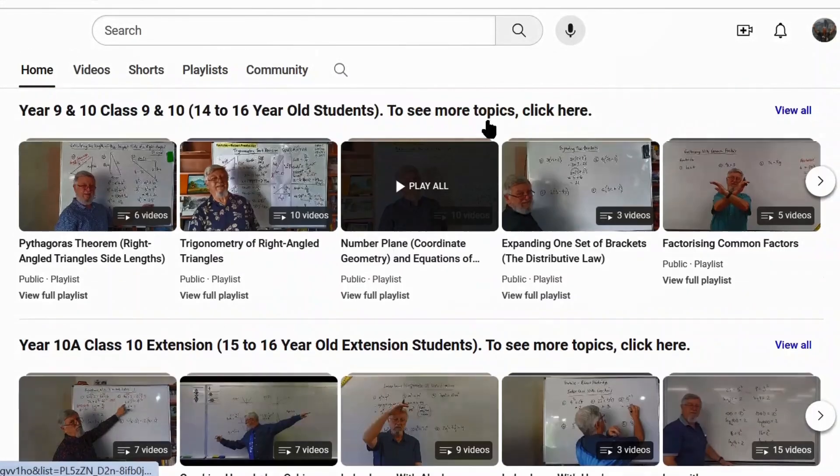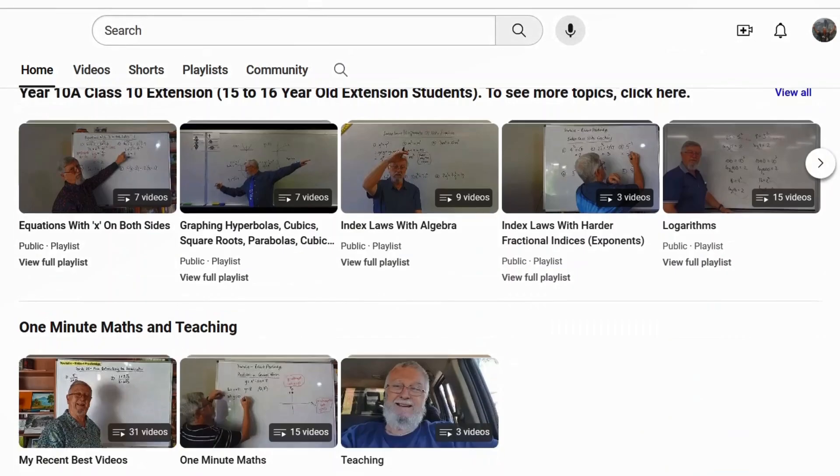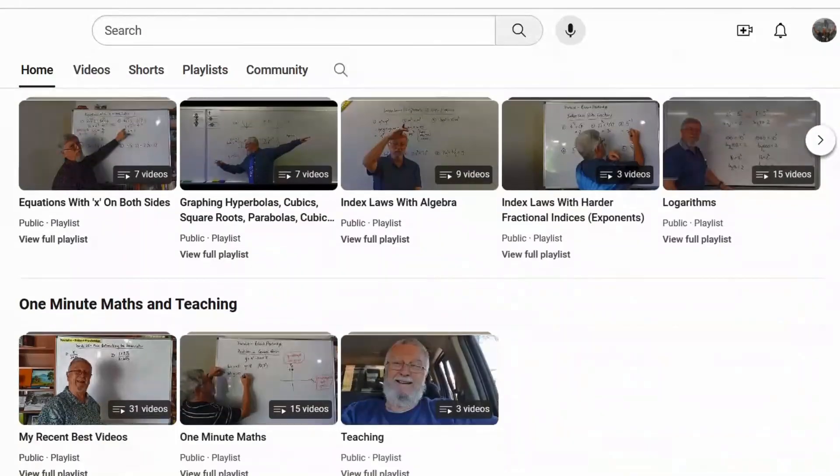So then you get the Year 9 and 10. Now in Australia we have this unusual situation where our Year 10 splits up into two groups and we have an extension or an advanced class. So I've got a separate section for 9 and 10 which doesn't quite go so far as the 10A, so each of those go a lot further. And then you have at least lower level.